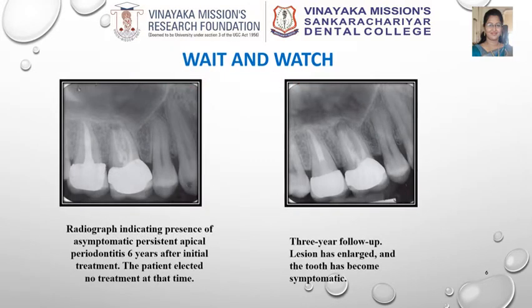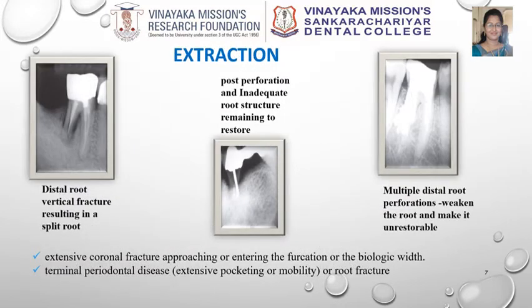Wait and watch policy is commonly followed in asymptomatic persistent apical periodontitis cases, similar to this case. The patient elected no treatment, but in a certain period of time the lesion enlarged, turning the tooth symptomatic, and this warrants further treatment. The second treatment option of extraction is advisable only when the tooth is rendered unrestorable in situations like distal root fracture resulting in a split root, post perforation, multiple distal root perforations, coronal fracture entering the furcation area, terminal periodontal disease, and so on.